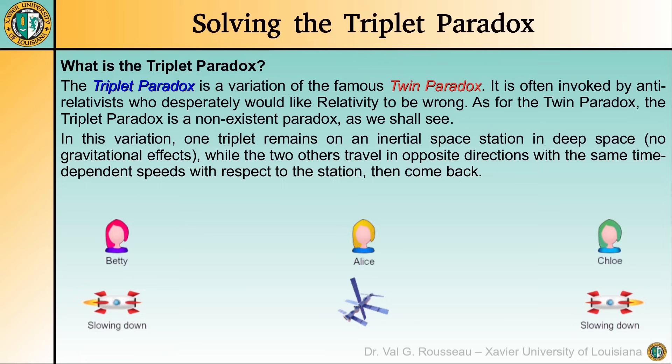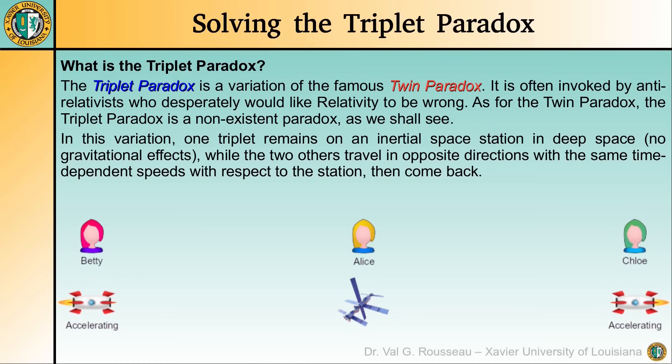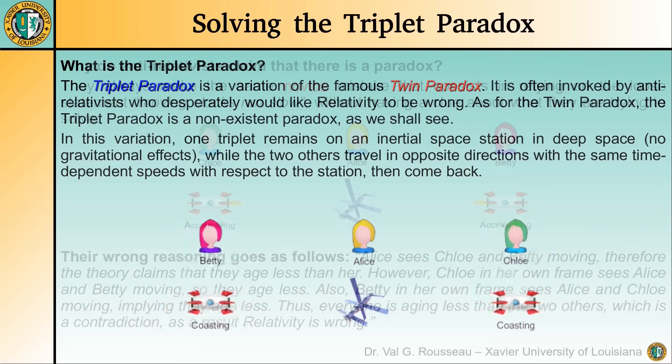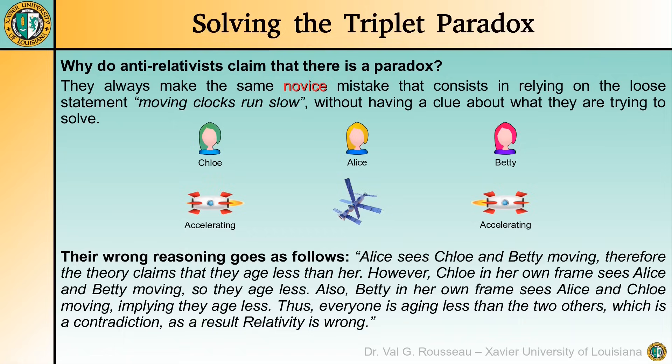Thus, no acceleration due to rotational motion needs to be taken into account. The reason why anti-relativists claim that there is a paradox is that they systematically make the same novice mistake — purposely or not — that consists in relying on the loose statement according to which moving clocks run slow.